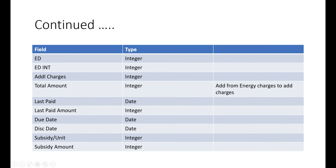Energy charges require backend logic: for example, according to government rules, up to 100 units one charge applies, more than 100 units a different charge applies. For commercial connections, different charge values apply. We need to write backend logic for energy charges. Fixed charges are numerical values, possibly circle-wise. Customer charges are also a fixed value.